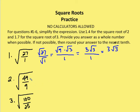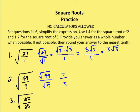Second problem: I have the square root of 49 over the square root of 9. I can rewrite that using the quotient property as the square root of 49 over the square root of 9. The square root of 49 is 7, and the square root of 9 is 3. So that's my answer: 7 over 3.